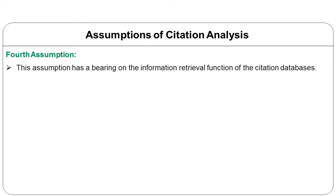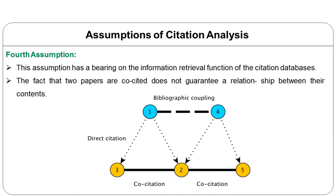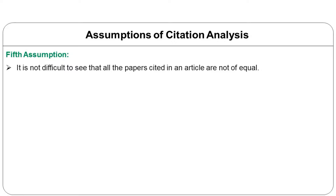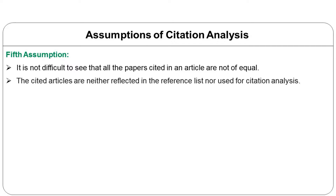The criticism about the fourth assumption has a bearing on the information retrieval function of citation databases. We cannot say that all citations in a given document are equal in nature, and the same applies to co-citation as well. The fact that two papers are co-cited does not guarantee a common relationship between their content. The criticism about the fifth assumption is that all citations may not be equal in importance as far as the citing document is concerned, which might have a negative impact on overall results.